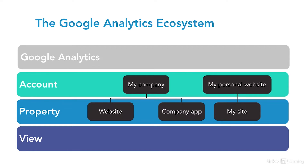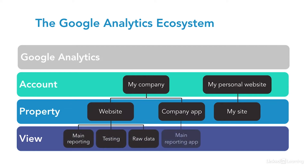Within each of those properties are something called views. Views are really powerful, and advanced users are going to find all kinds of unique uses for them, but they can be a little bit confusing at first. Think of each view like a lens into that database that can be configured completely independently of the others. For example, in one view, you may want to have data from just California, or maybe you have multiple country domains that feed into this one account, but you can create these views that are going to separate out just your French site, for example.